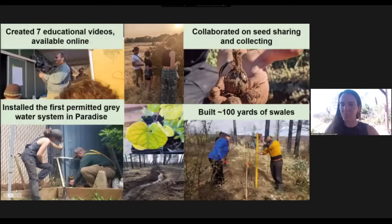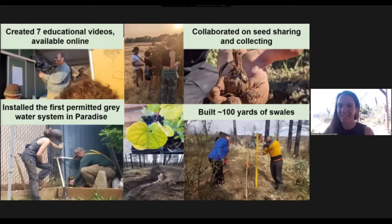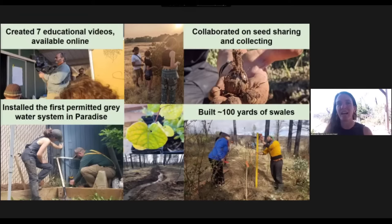Some of our activities: seed sharing and collecting as part of our resource sharing — this is an activity we typically collaborate on with Chico TEK. We create educational videos available on our YouTube channel, ranging from gray water system installation to dealing with invasive plants on your property, particularly broom species, which is a big issue in our area. And the other one is planting and tending to blue oak trees, which is a staple tree for indigenous folks in our area and a really indicative species — they're not found in many places.